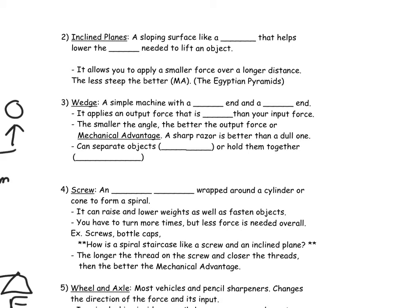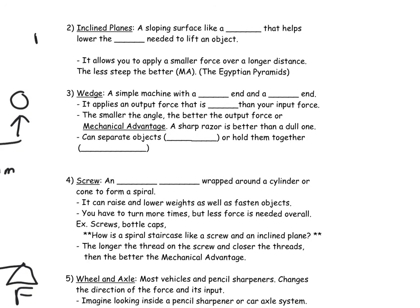The next simple machine is the inclined plane, also known as a ramp. It is a sloping surface that helps lower the force needed to lift an object — instead of picking it up, you push it up or down the slope, making the force less but increasing the distance. The less steep the slope, the better the mechanical advantage. Many of you talked in social studies about how inclined planes or ramps were used to help build the Egyptian pyramids.